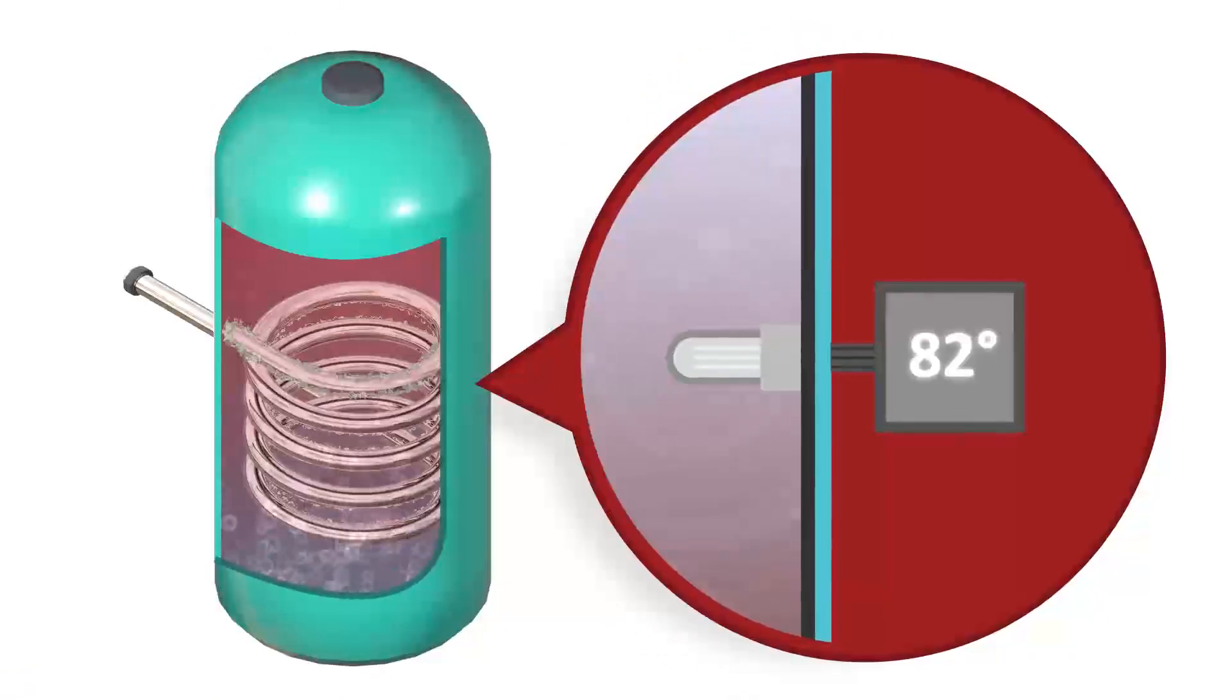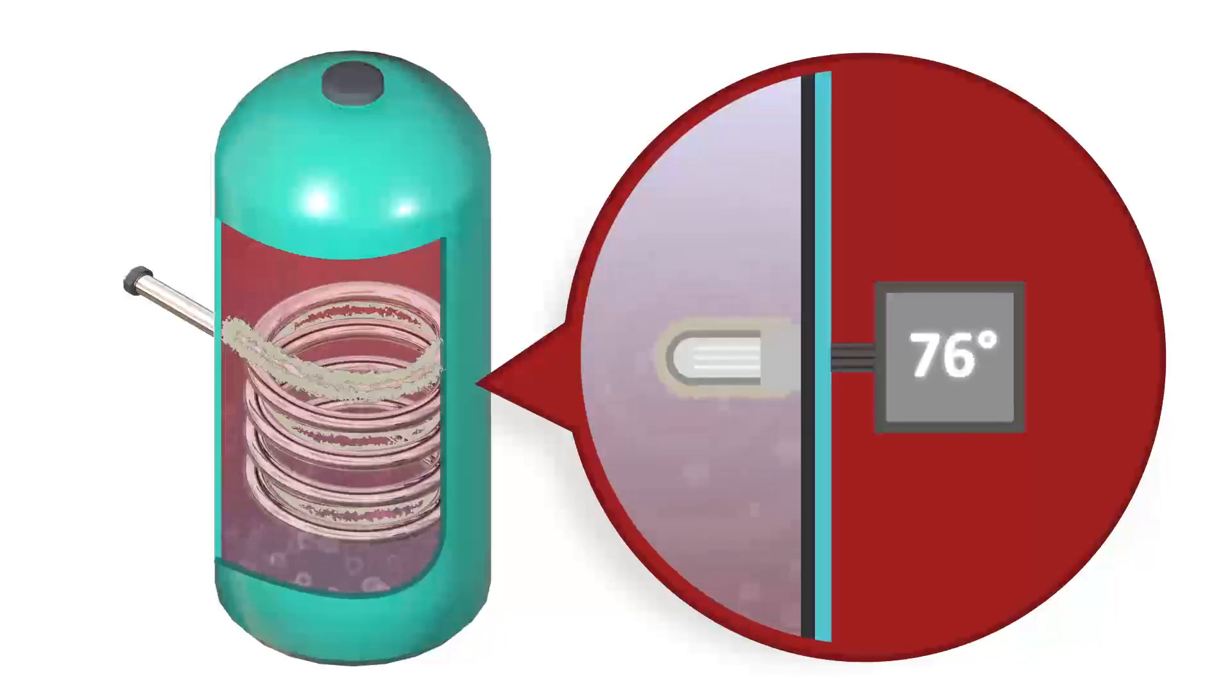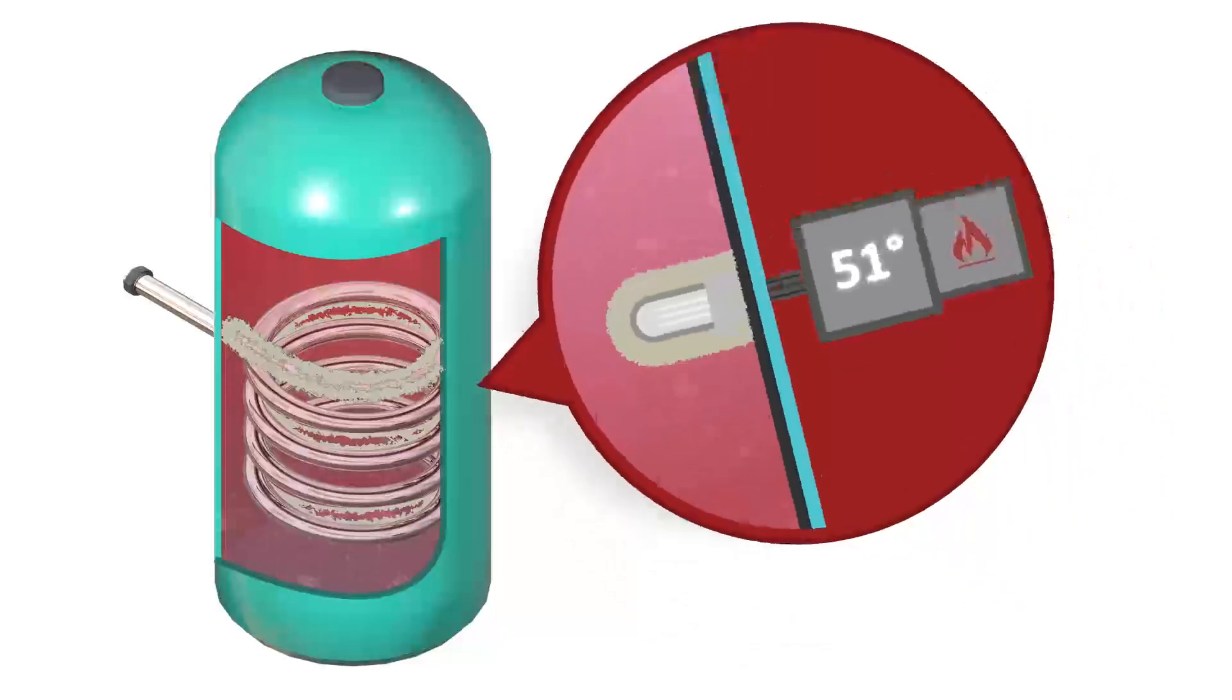Furthermore, scale build up on sensors in heating systems is a major cause of energy waste. When a sensor or sensor pockets get scaled up, it will give false readings to the heating controls and will cause water to be heated to a higher temperature than required. This is particularly important in modern heating systems, as they rely heavily on these sensors, which are in boilers, hot water cylinders and heat pumps.